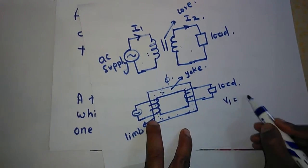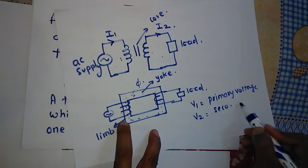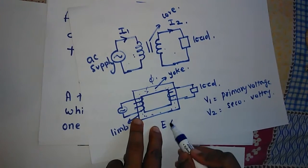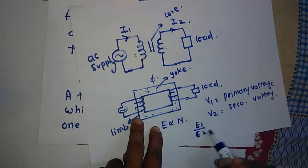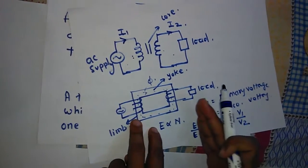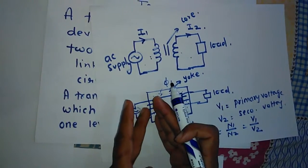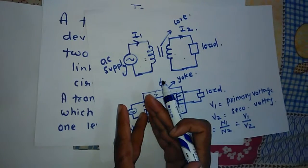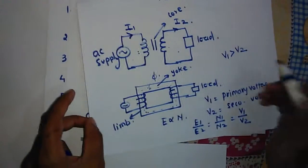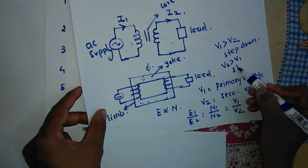The level of voltage is changed from primary to secondary. Suppose the primary voltage is V1 and secondary voltage is V2. The change of voltage in a transformer happens by changing the number of turns, where E is proportional to N. So we can say E1/E2 = N1/N2, and also V1/V2. From this relationship, voltage is changed from primary winding to secondary winding. If V1 is greater than V2, this is a step-down transformer. If V2 is greater than V1, this is a step-up transformer.